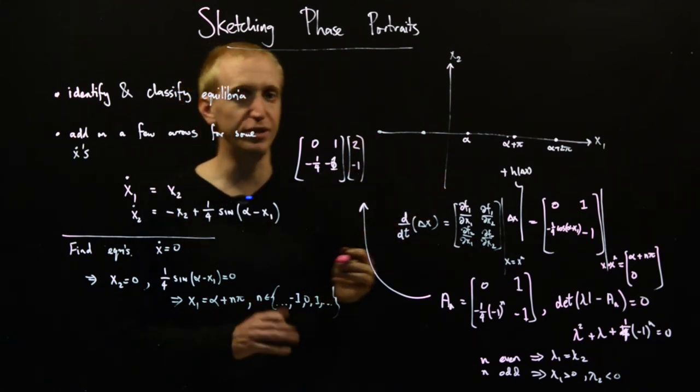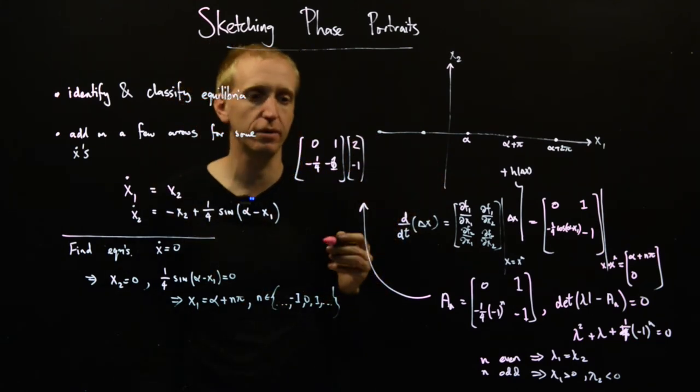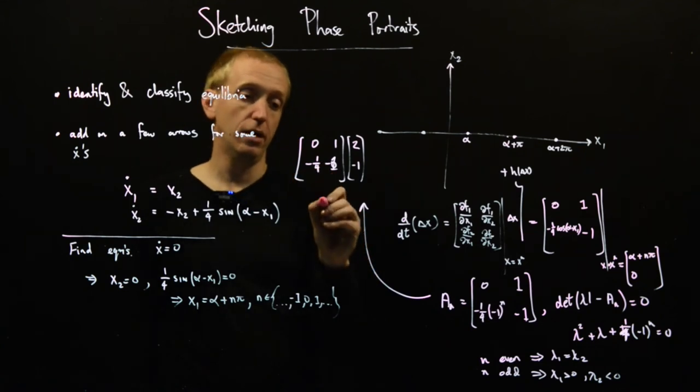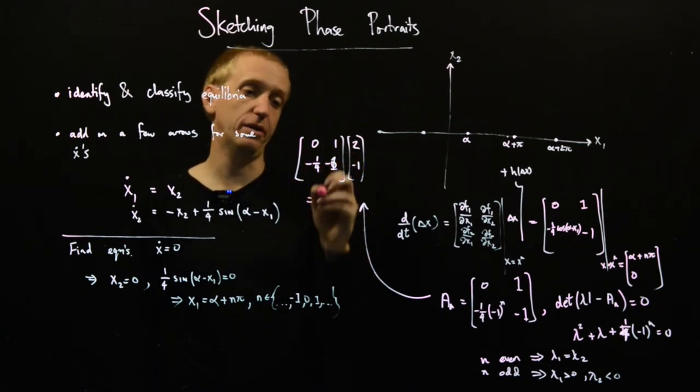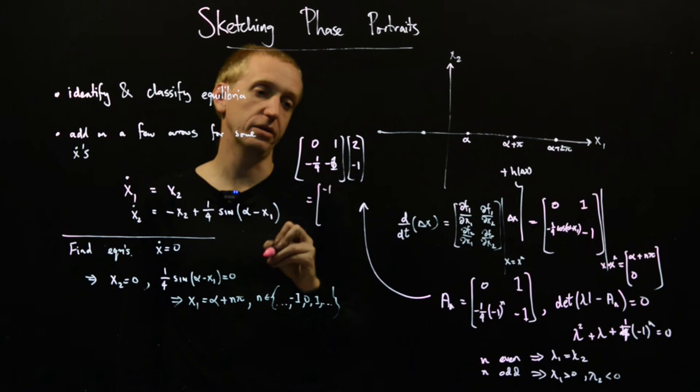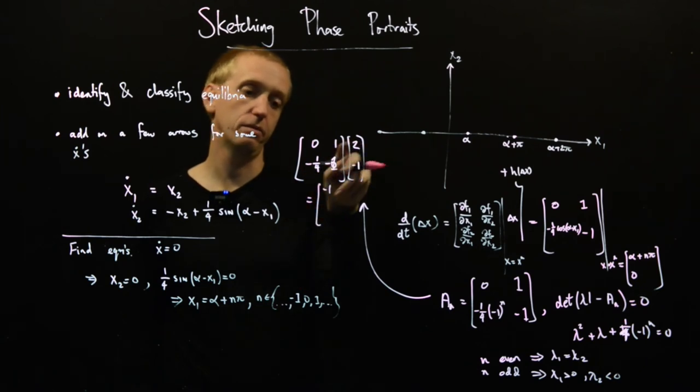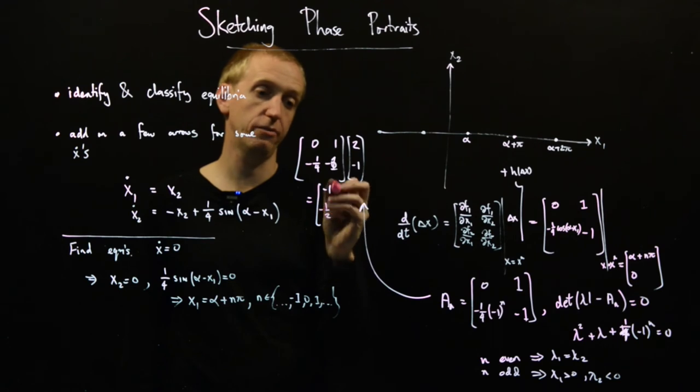And if we just multiply this out, we get minus 1. And then minus a quarter of 2 is minus a half. Plus 1.